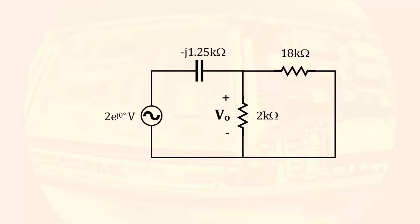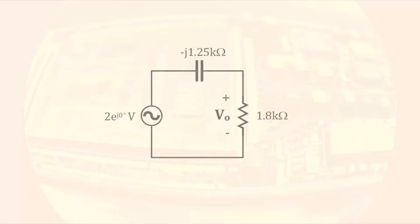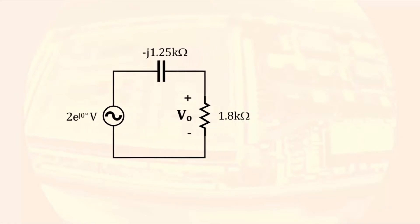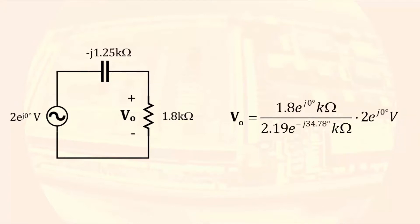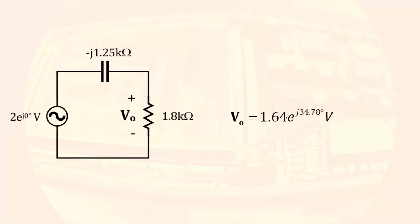The 2 kilohm and the 18 kilohm resistors are in parallel and combine to a 1.8 kilohm resistor. Remember that combining resistors in parallel does not affect the voltage across the combination. Combining those resistors allows us to solve for the phasor voltage using voltage division. VO will be the 1.8 kilohm resistor divided by the sum of impedances in series, times the source voltage. Since all computations are multiplications and divisions, we should convert the phasors to polar form. The magnitude will be the product of 1.8 times 2 divided by 2.19, and the phase angle will be 0 plus 0 minus negative 34.78 degrees.